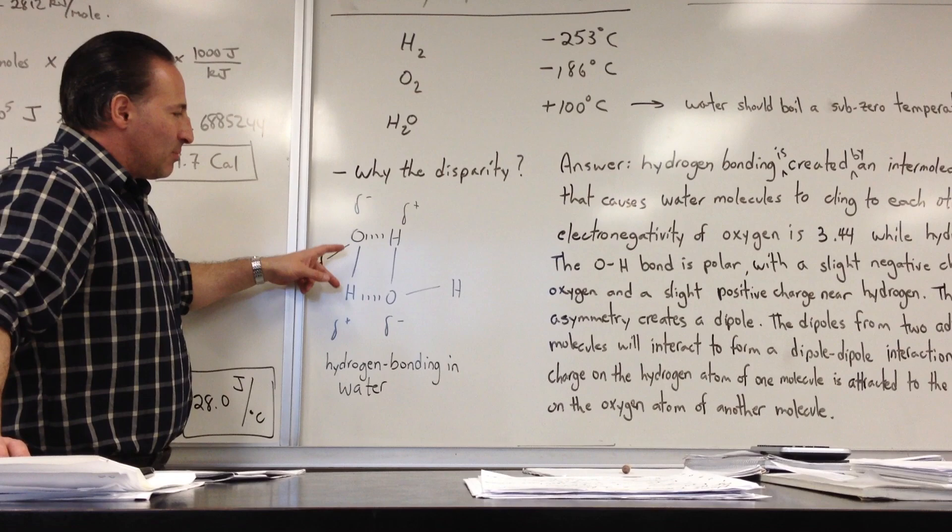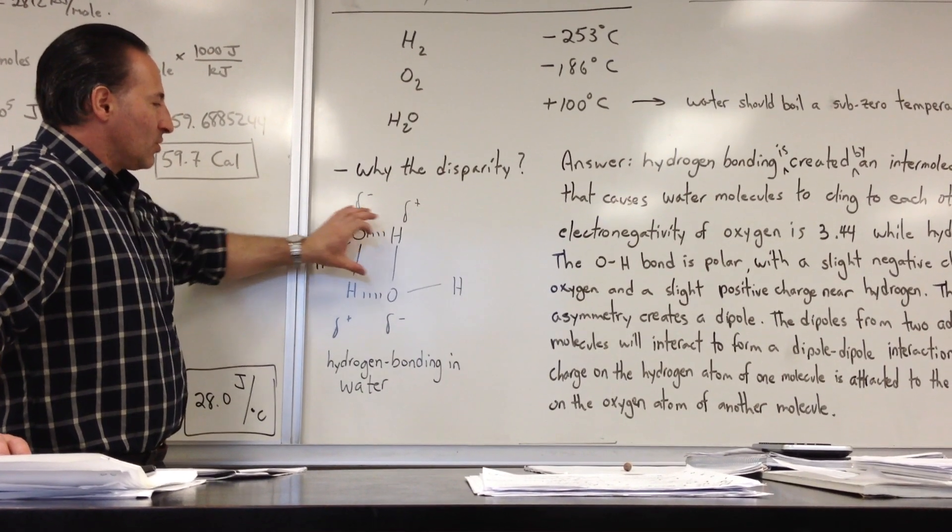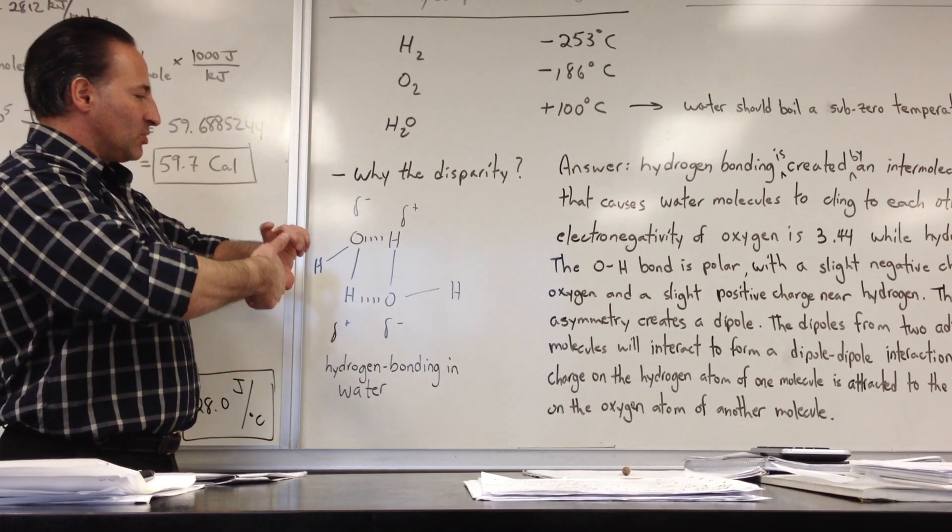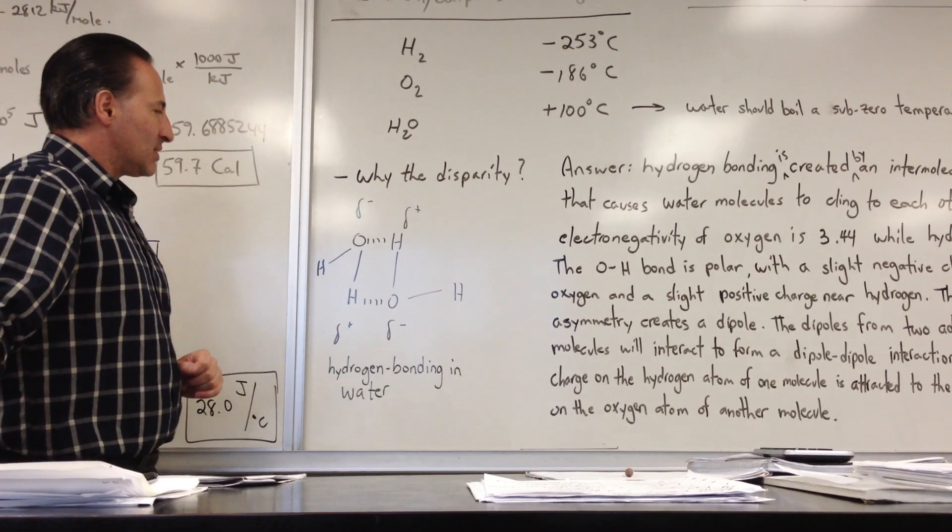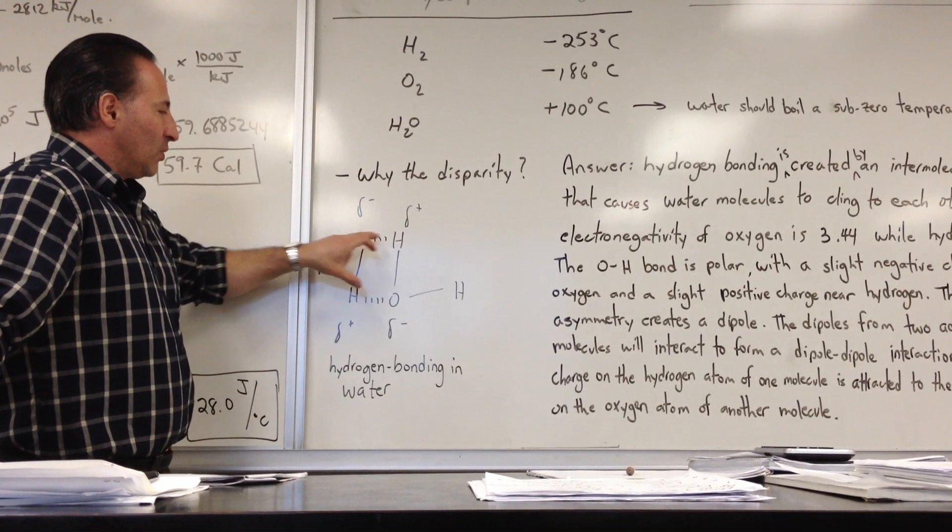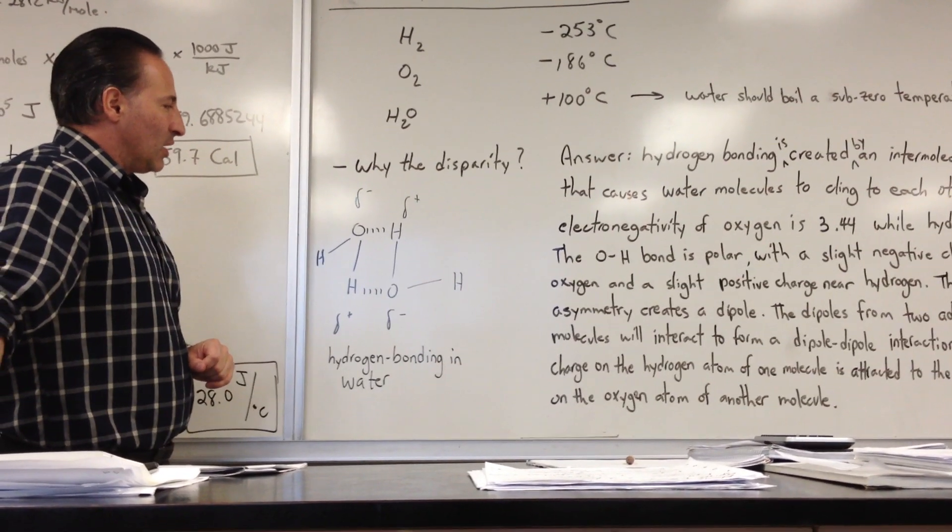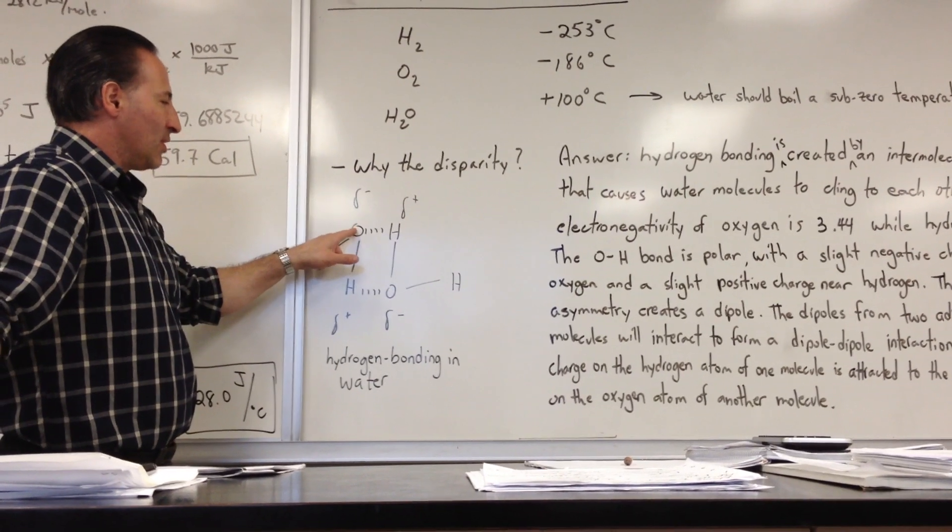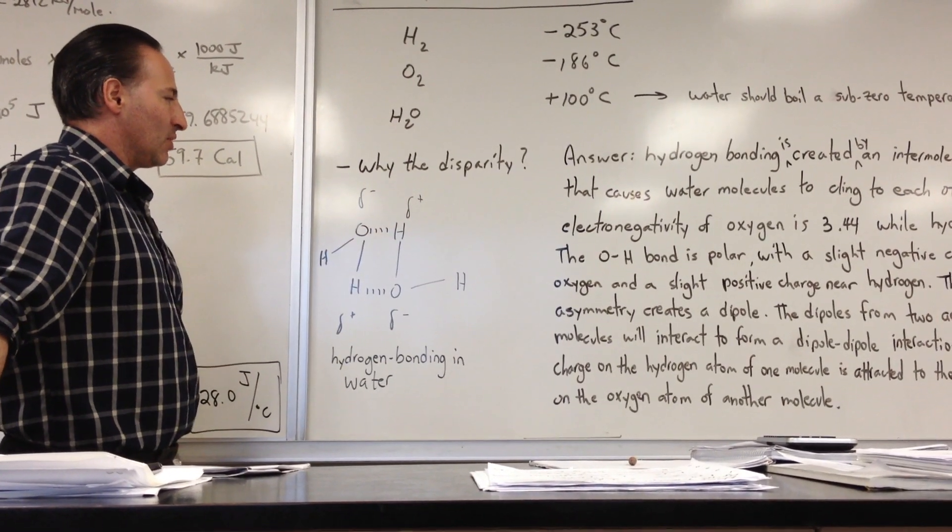That results in a dipole, and when two water molecules are close to each other, those two dipoles will orient like little magnets, and there will be a weak bond that will form between the oxygen atom of one water molecule and the hydrogen atom of the other water molecule.